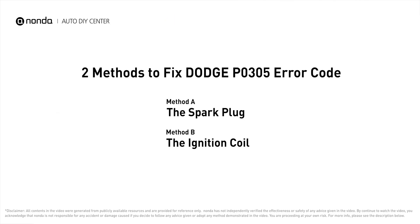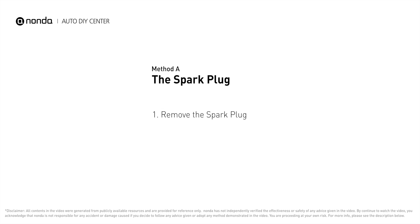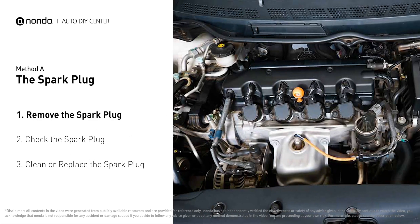Here are two of the most practical solutions to fix Dodge's P0305 error code. Method A: the spark plug. The spark plugs are located at the engine end of the wires, under the plug covers that attach them.